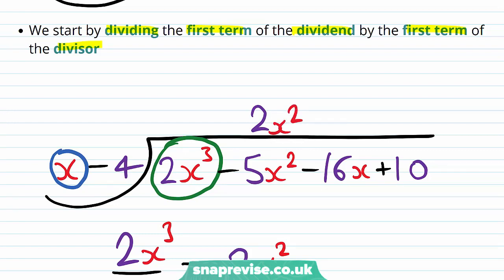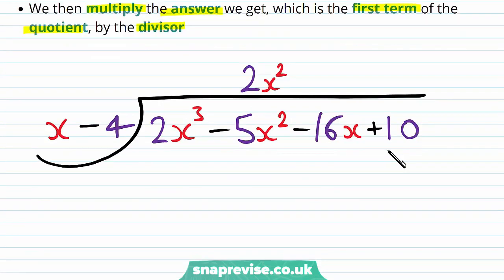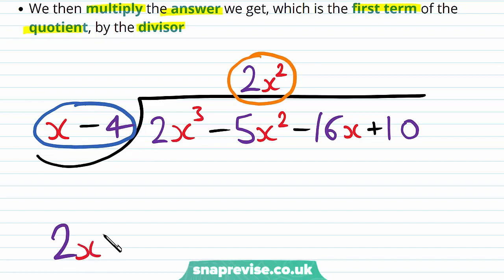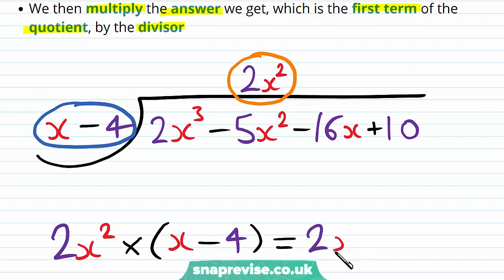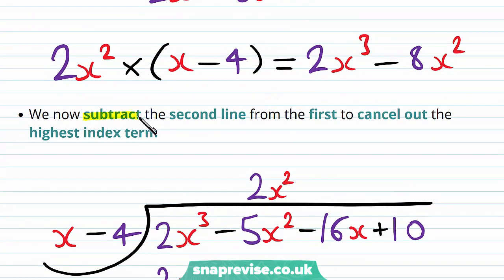This becomes the first term of our quotient. We then multiply the answer we get — which is the first term of the quotient, 2x² — by the whole divisor. So we have 2x² multiplied by (x − 4), and this gives us 2x³ − 8x². Then we write this directly underneath our whole dividend, again in line: we have a 2x³ here, and our −8x² here.